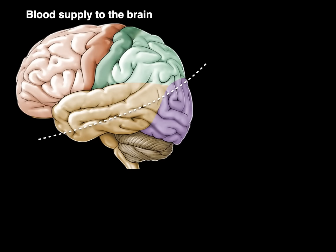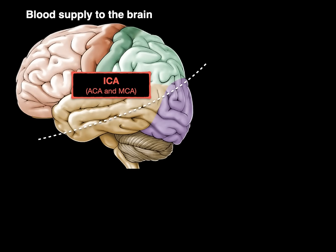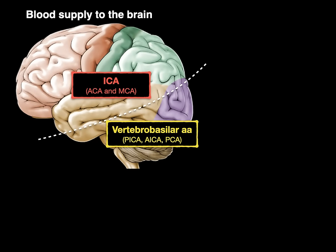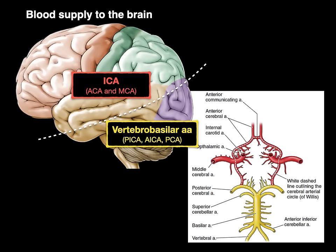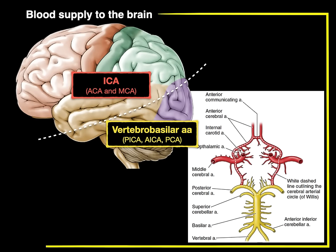In this lateral view, everything above the dotted line is provided by the internal carotid artery and its branches, and everything below it is supplied by the vertebral basilar artery and its branches. And that, my friends, is the blood supply to the brain in a nutshell.